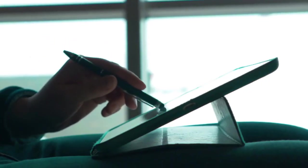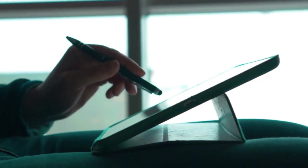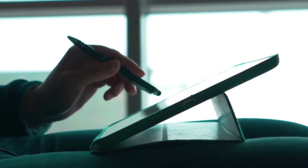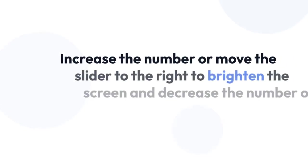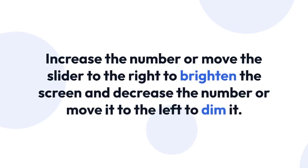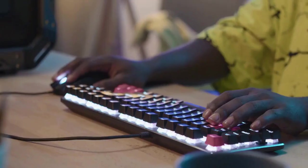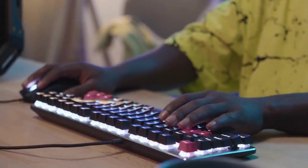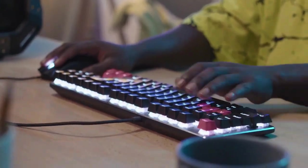Once you've found the setting, you'll see a numerical value or a slider representing the brightness. Increase the number or move the slider to the right to brighten the screen, and decrease the number or move it to the left to dim it. Press the Menu button again to exit the OSD menu.